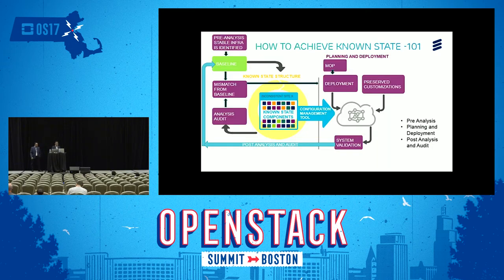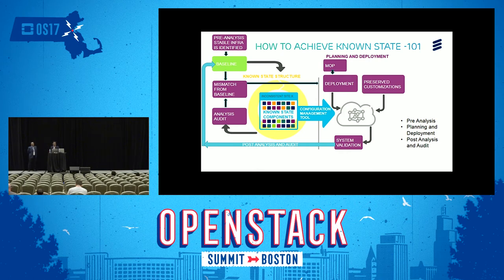Thank you, Shashank. How to achieve known state? Known state can be broadly achieved through three phases. The first phase is the pre-analysis phase, then the planning and deployment phase, and the last phase is post-analysis and audit. Let's go through the first phase: the pre-analysis phase.